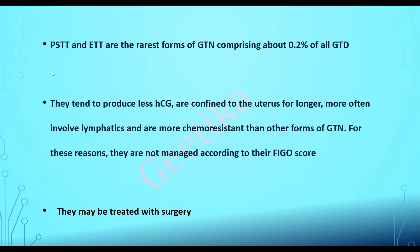Other forms of gestational trophoblastic neoplasia — placental site trophoblastic tumors and epithelioid trophoblastic tumors — are rare varieties of GTN, comprising 0.2% of all GTDs. They tend to produce less HCG, are confined to the uterus for a longer duration, more often involve the lymphatics, and are more chemo-resistant than other forms of GTN. For these reasons they are not managed according to FIGO score — they are managed by surgery. The treatment of choice for these is surgery.